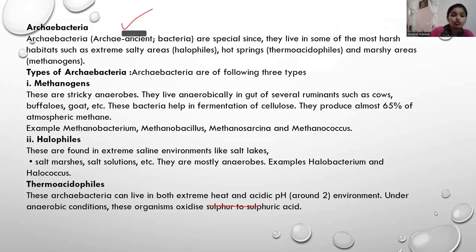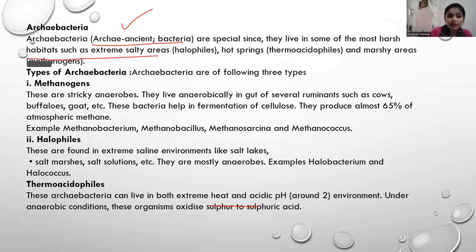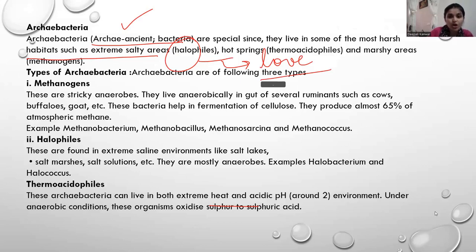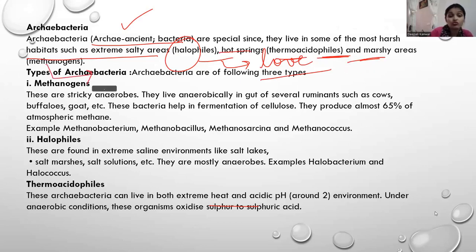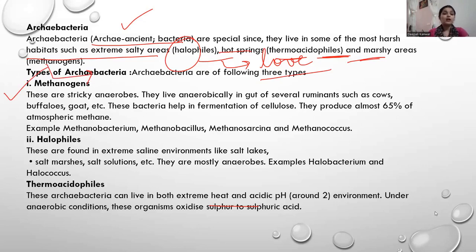Now, Archaebacteria — 'archi' means ancient, those that have been found since very long ago. They can live in harsh habitats — extremely salty areas (halophiles, meaning lovers of salt), hot springs (thermophiles, meaning lovers of heat), and marshy areas where methanogens are found. Archaebacteria are differentiated into three types.